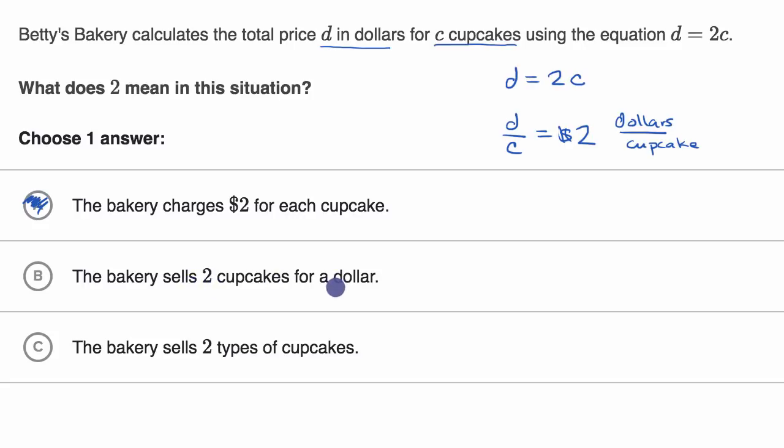The bakery sells two cupcakes for a dollar. No, that would be two cupcakes per dollar, not two dollars per cupcake. The bakery sells two types of cupcakes. No, we're definitely not talking about two types of cupcakes. They're just talking about cupcakes generally, or I guess one type of cupcake. But just cupcakes generally is two dollars per cupcake.